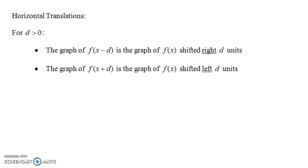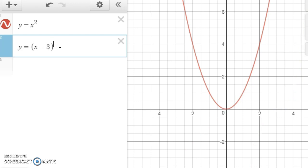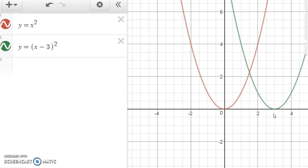We're taking the formula for our function and replacing all the x's with x plus some number. So instead of looking at x squared, we look at (x + 3) squared. So (x + 3) squared would be the same thing as x squared, only shifted left three units. Let's look at some graphs on Desmos. We have y equals x squared. If we graph y equals (x − 3) squared, notice it's the same thing as y equals x squared, only it's shifted to the right three units.